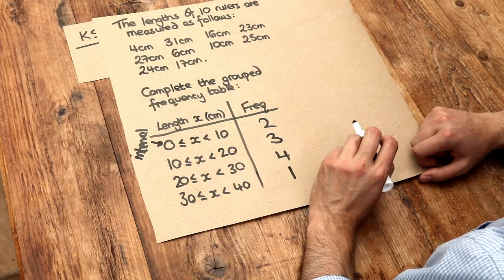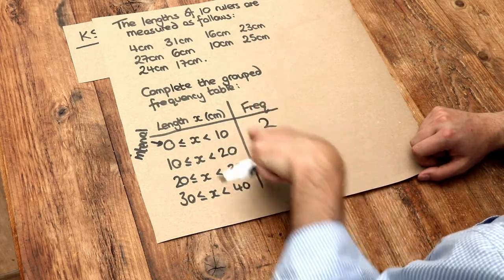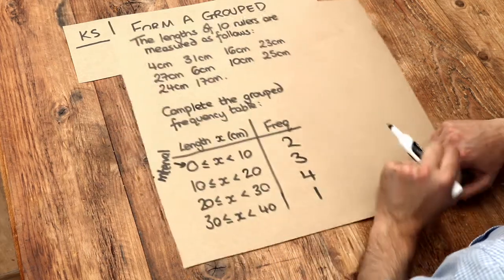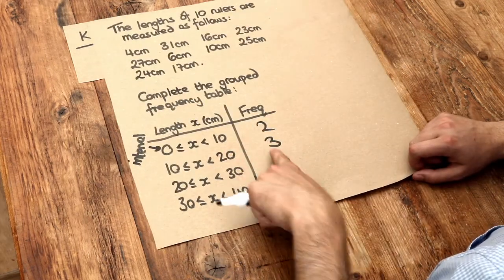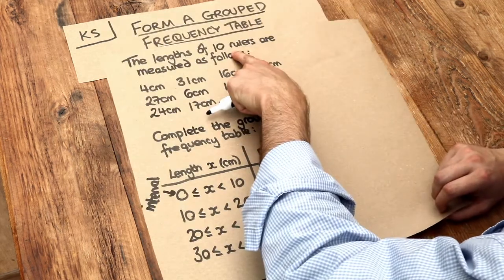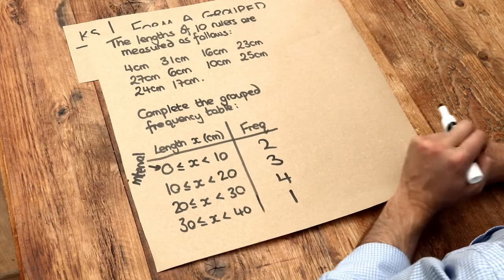Now just to check if your answer might be right, if you add these frequencies together, that should come to how many rulers you have in total. Now if you add 2, 3, 4 and 1, that adds up to 10, and we have 10 rulers, so we've probably got these frequencies right.